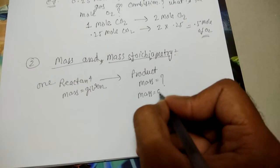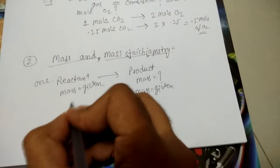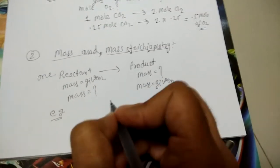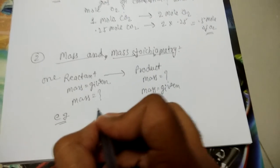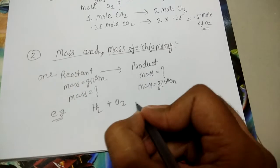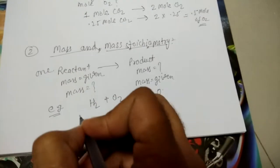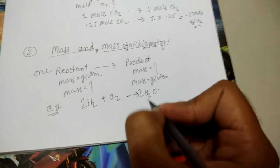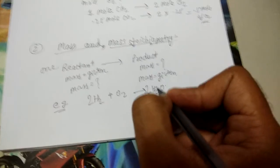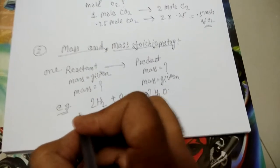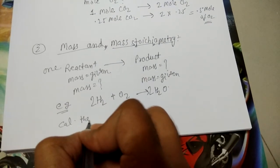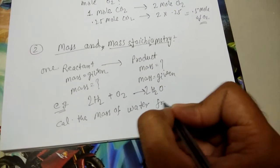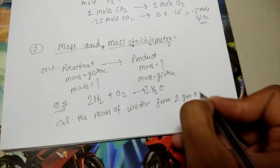And if mass of product is given, then you will find mass of reactant. Suppose an example: hydrogen gas reacts with oxygen to give water molecule. You should balance the equation - 2 moles of hydrogen react with 1 mole of oxygen gives 2 mole of water. Then calculate the mass of water from 2 gram of hydrogen.